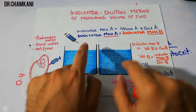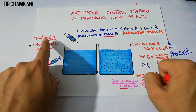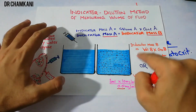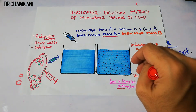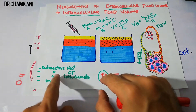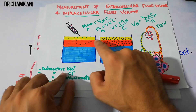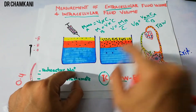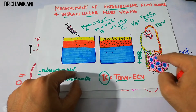Using indicators like radioactive water, heavy water, and antipyrin — which distribute evenly in all body fluids including plasma, interstitial fluid, and intracellular fluid — we can measure total body fluid. For extracellular fluid, we use special indicators like radioactive sodium, radioactive chloride, radioactive iothalamate, and inulin. These only distribute in the plasma and extracellular fluid, not in the intracellular fluid, as shown in the diagram.